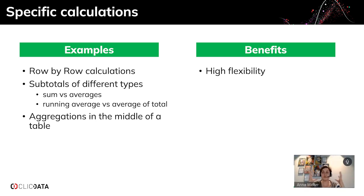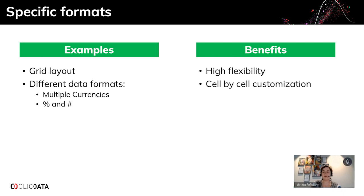The scorecard table is also ideal if you want different subtotal types within the same table — for example, sums in one case and averages or running averages in another. These things can be done in a pivot table, but the design can be challenging. Same thing if you want aggregations in the middle of the table rather than at the end or beginning. And if you're dealing with different formats within the same column — for example, mixing different currencies or percentages and numbers — that's something very challenging in a classic table, whereas in the scorecard table it's really easy.